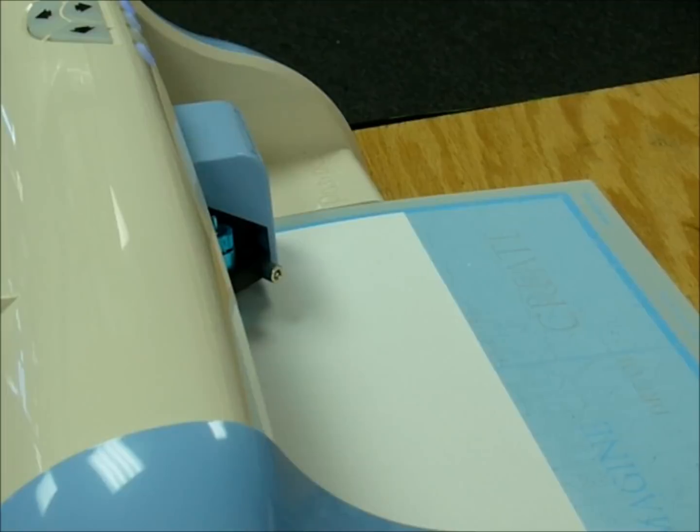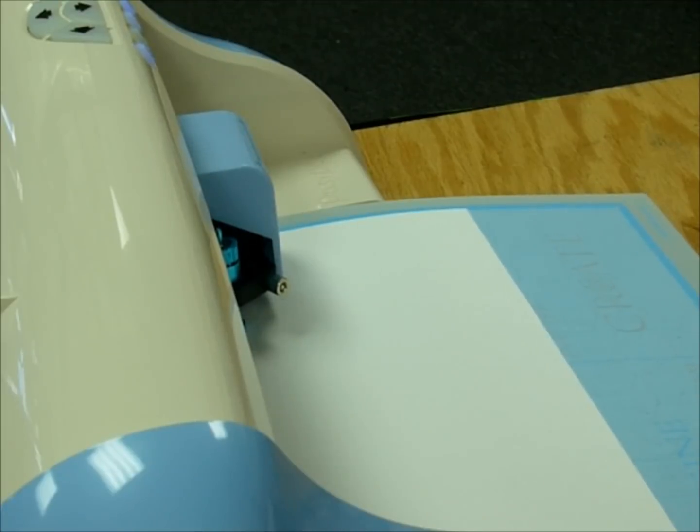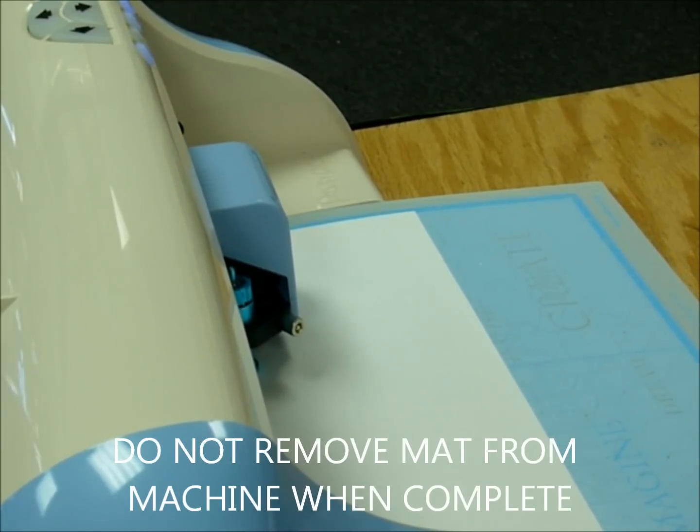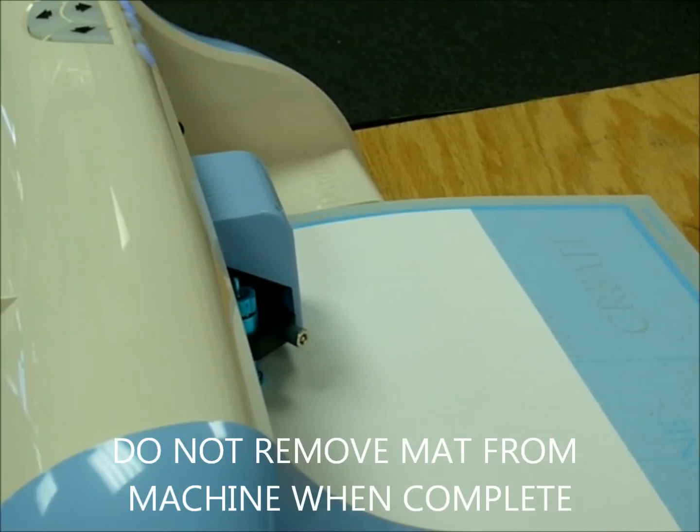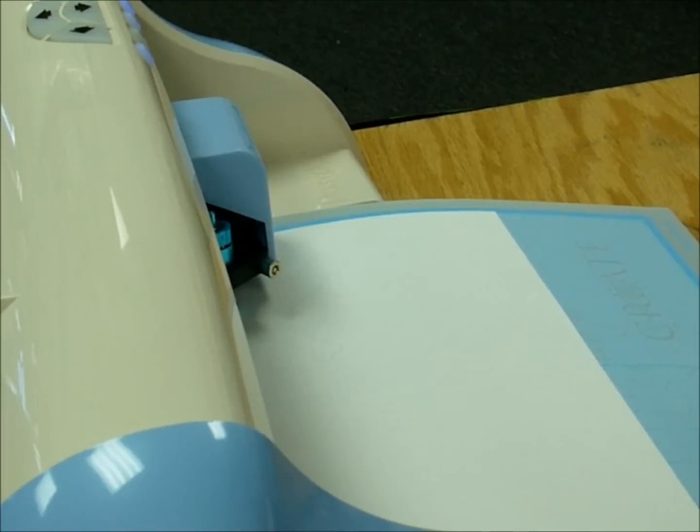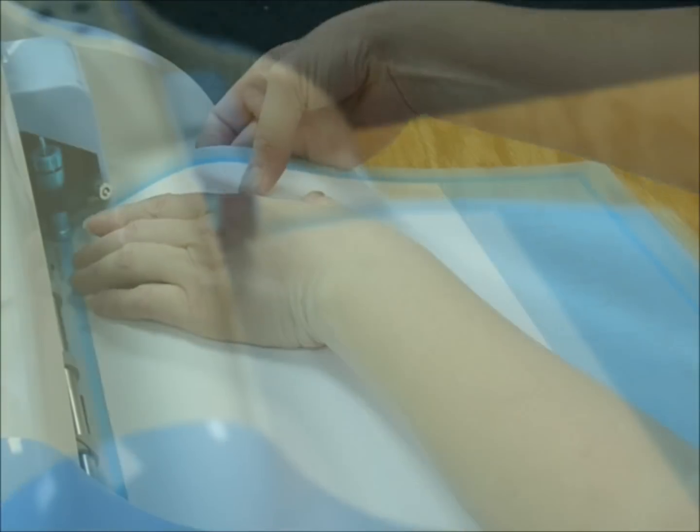Keep in mind that once this is done cutting, we're not going to remove the mat from the machine. If you have a Cricut that is able to use third-party software such as Make the Cut, just press load mat again. Do not press unload mat. If you have the Puzzles, leave it alone. Don't unload your mat.